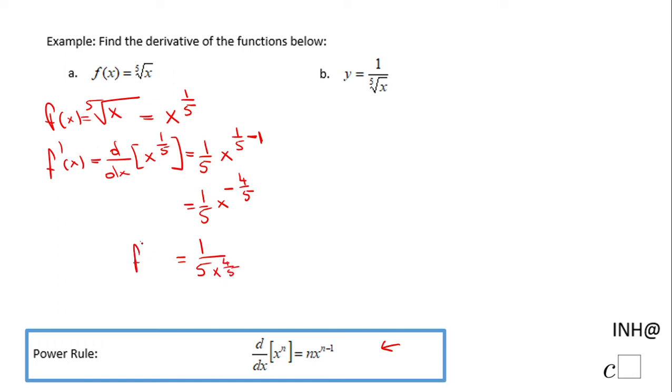That will be f prime of x. Of course you may want to change this one also to a radical form: 1 over 5 and here we have fifth root of x to the fourth power. This form will be correct.